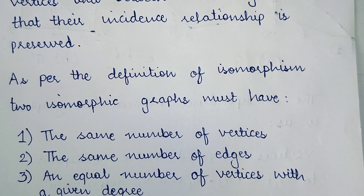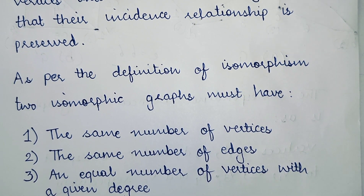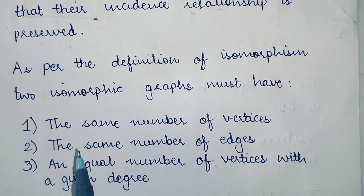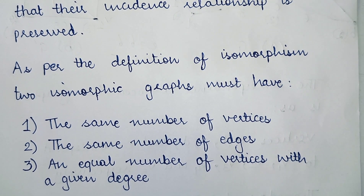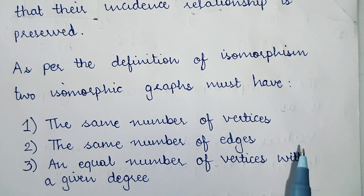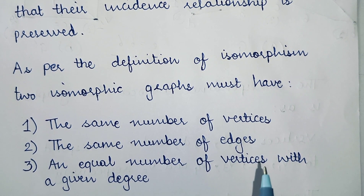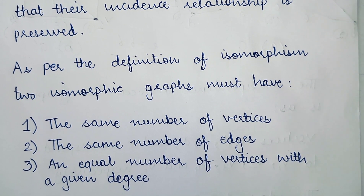As per the definition of isomorphism, two graphs are isomorphic if they satisfy these three properties. The first property is that they should have the same number of vertices. The second property says they should have the same number of edges. The third property says an equal number of vertices with a given degree. For example, if there are two vertices with degree 2 in graph A, then there should be exactly two vertices with degree 2 in graph B as well.